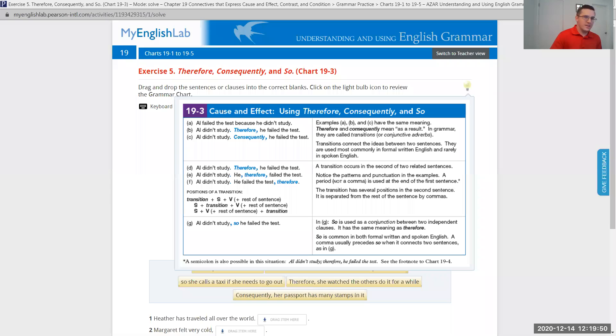Hi guys, this video covers Understanding and Using English Grammar 5th edition. We are on page 408, looking at chapter 19, Connectives. This video will talk about connectives that express cause and effect. So we're in section three, cause and effect, using therefore, consequently, and so.